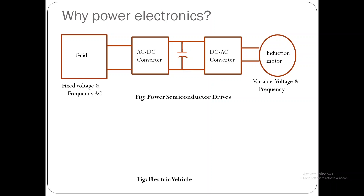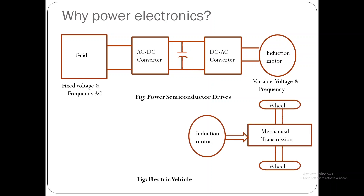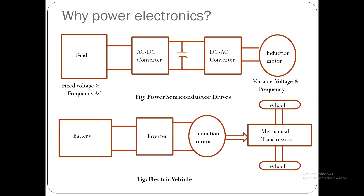Let me consider one more example: the electric vehicle. In an electric vehicle, speed can be controlled by an electric motor — here an induction motor — whose speed can be controlled by supplying it with variable voltage and variable frequency AC. However, in an electric vehicle the source available is a battery, which supplies DC power. There is a mismatch between source availability and load, and this gap can be bridged with a Power Electronics converter. An inverter converts DC available at the battery into the required AC to control the speed of the induction motor and thus the speed of the electric vehicle.